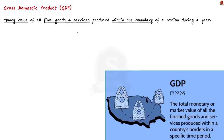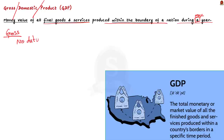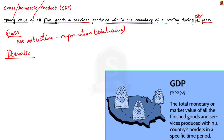GDP, or gross domestic product, is the aggregate or total value of goods and services produced within the domestic territory of a country. It is the market value of all final goods and services produced within the boundary of a nation during one year. 'Gross' signifies that no deduction has been made for the depreciation of machinery, buildings, and other capital products. 'Domestic' means production is by the resident institutional units of the country — so GDP includes all economic activities done inside the boundary of a country.